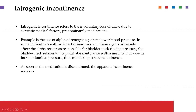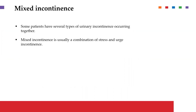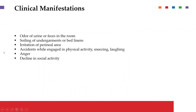There is also iatrogenic incontinence, which occurs due to other extrinsic medical factors — predominantly medication. For example, using alpha-adrenergic agents can affect the bladder and how sphincter relaxation occurs. Iatrogenic incontinence occurs as a result of medications or other medical conditions, and when these are discontinued, we regain the ability to control urine. Mixed incontinence is a combination — for example, stress and urge incontinence occurring together.